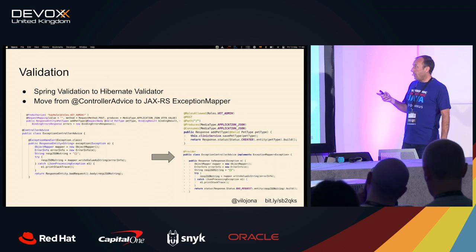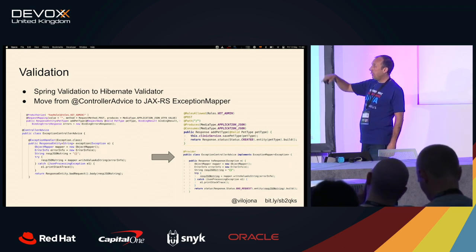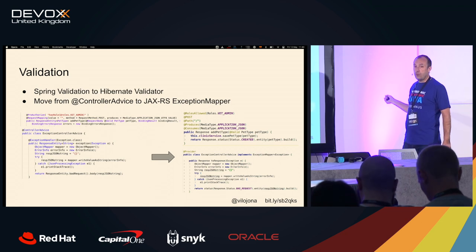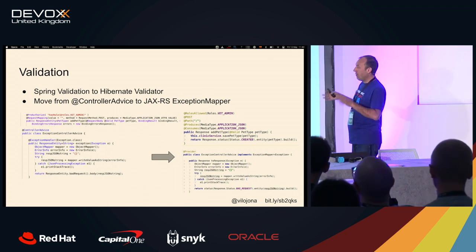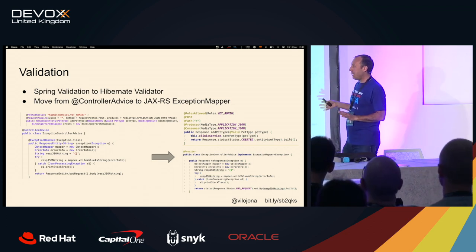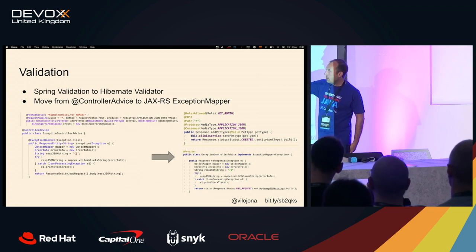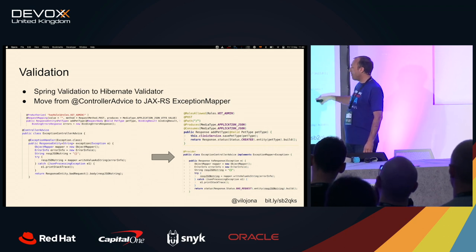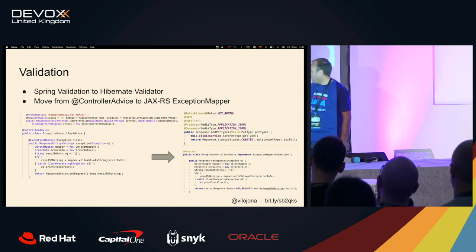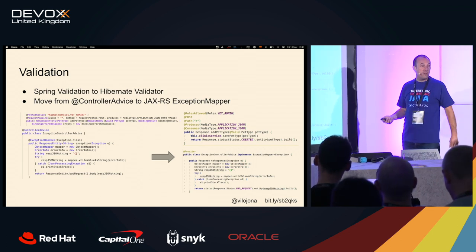Regarding validation — with Spring validation, we need to move to Hibernate validation. It's more or less the same. We are moving from a @ControllerAdvice to implementing an ExceptionMapper. More or less the same — it was easy.